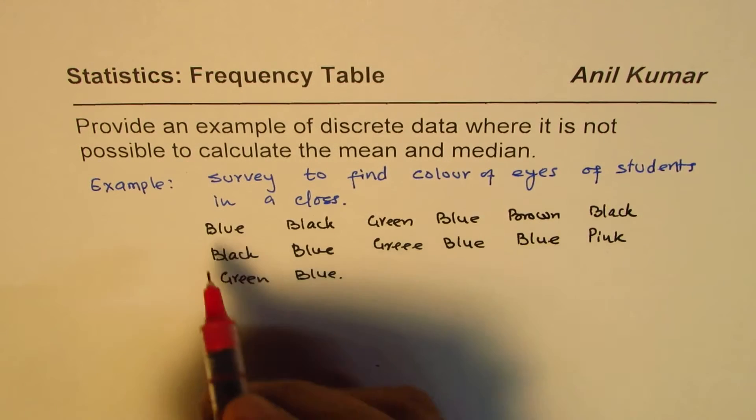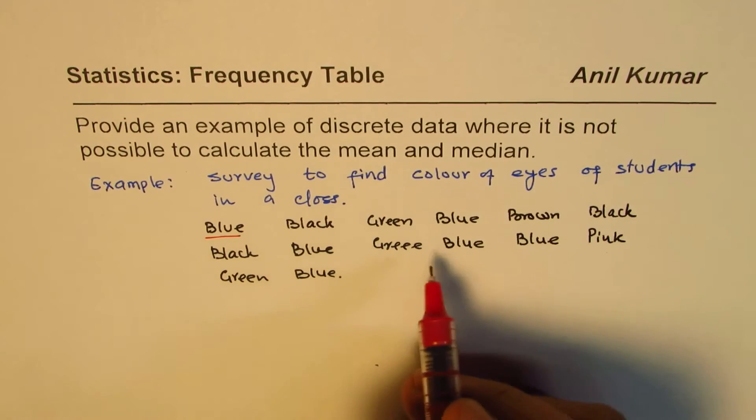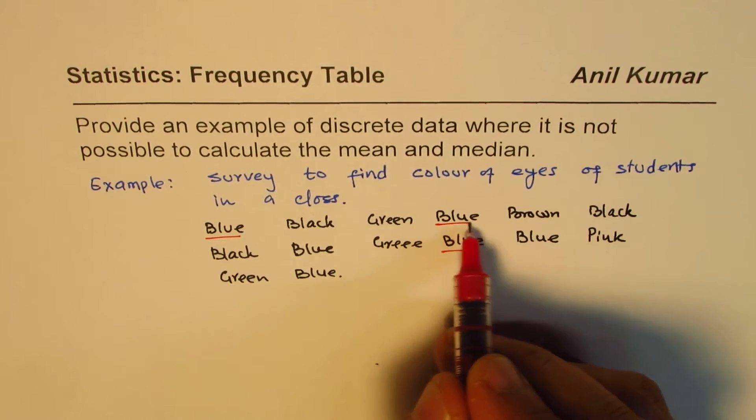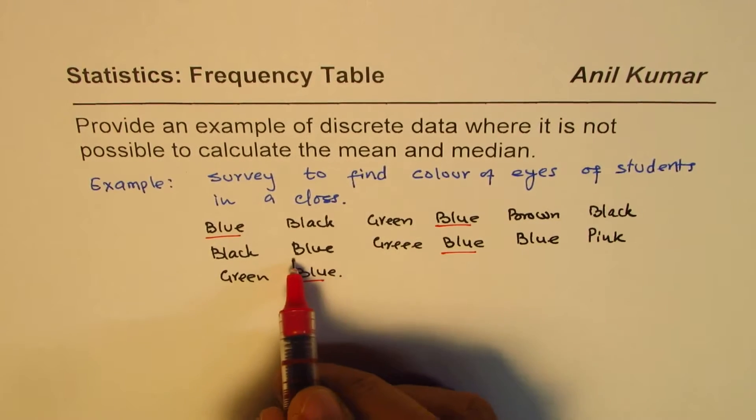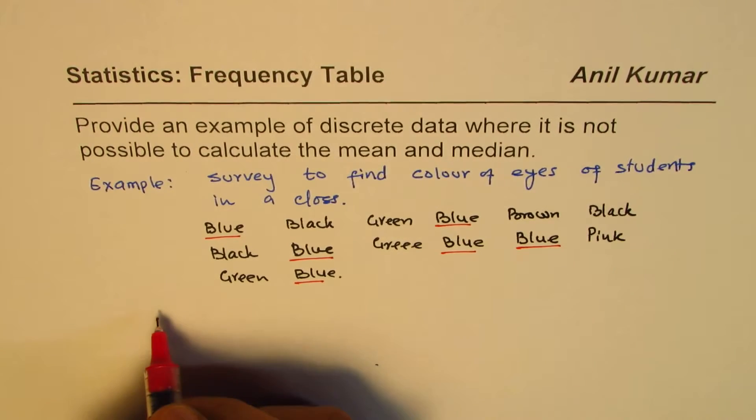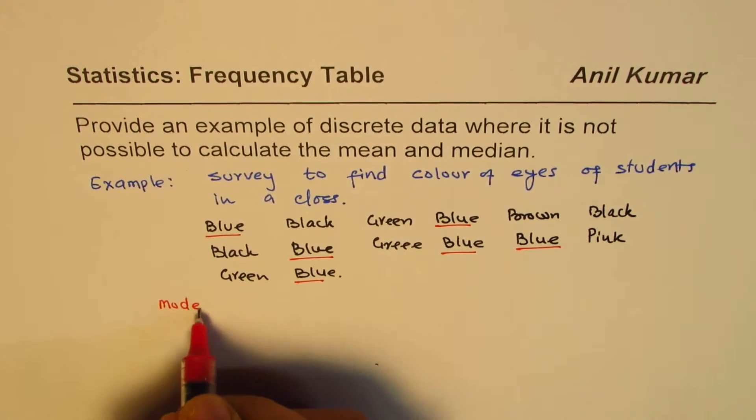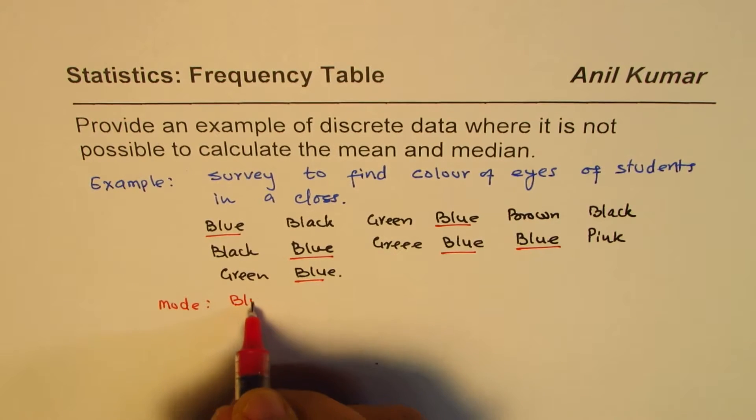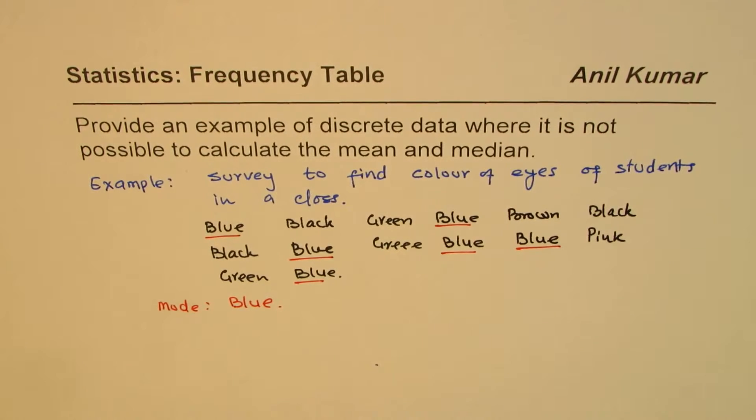Now clearly from this data, you can see that the most frequent colour which was noticed was blue. So blue becomes the mode. So we know what the mode is. So mode in this case is blue.